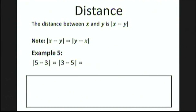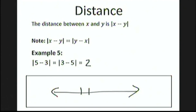Now let's talk about distance. The distance between x and y is the absolute value of x minus y. The absolute value of x minus y is always equal to the absolute value of y minus x. So for example, the absolute value of 5 minus 3, or the absolute value of 3 minus 5, they're the same — equal to 2 — simply because the distance between 3 and 5 is 2 units on the number line.